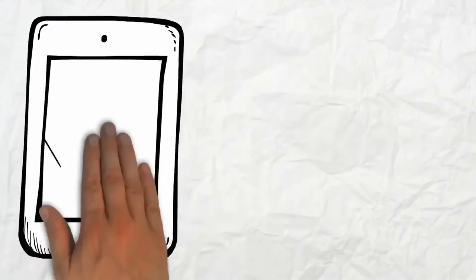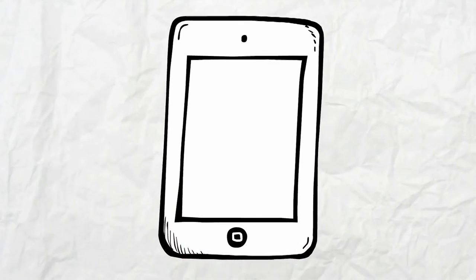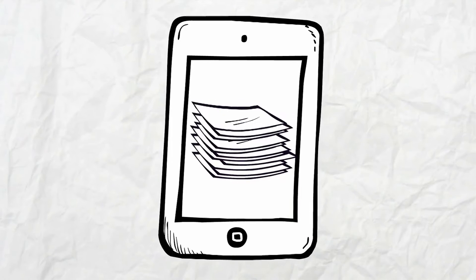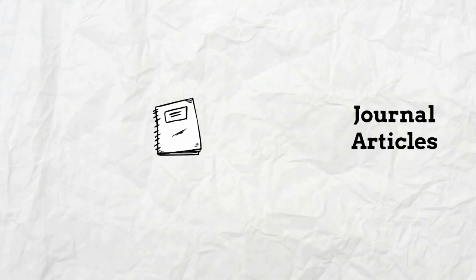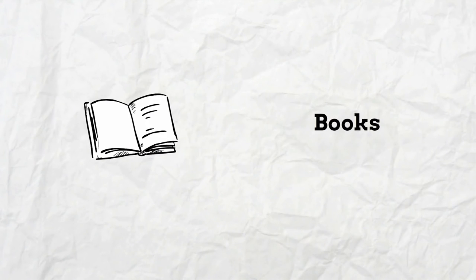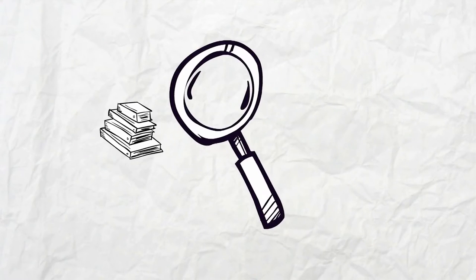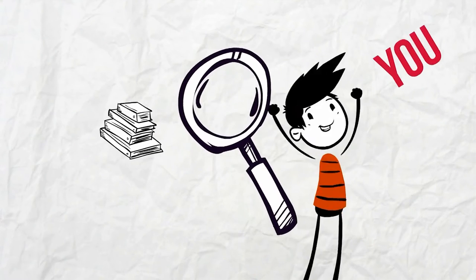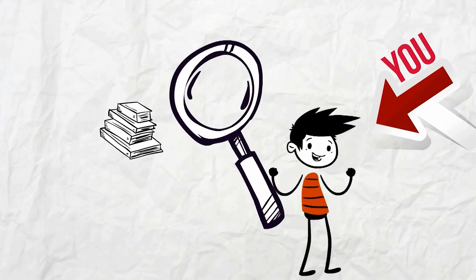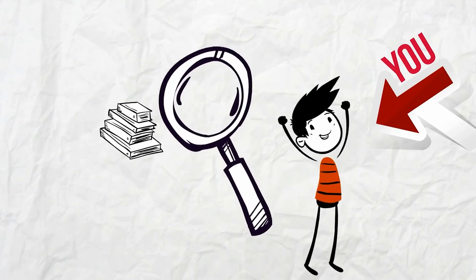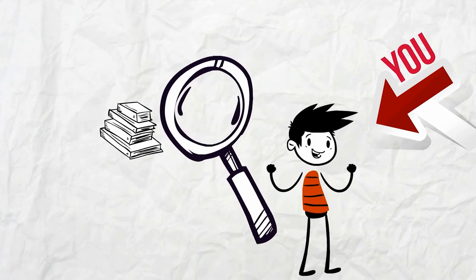So, what do we mean by library databases? Library databases are organised collections of content. Whether that content is journal articles, books, reports or statistics, it's all searchable and usually subject-specific and easy to trace back to its original source.